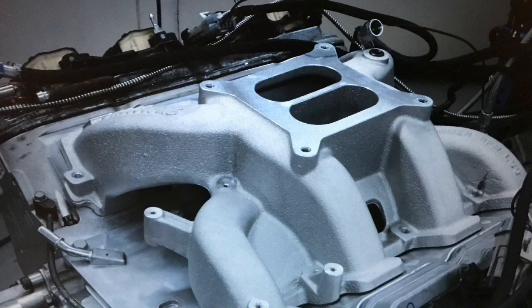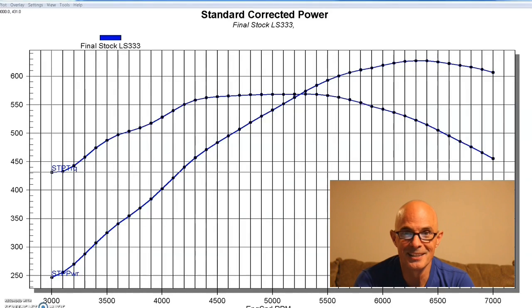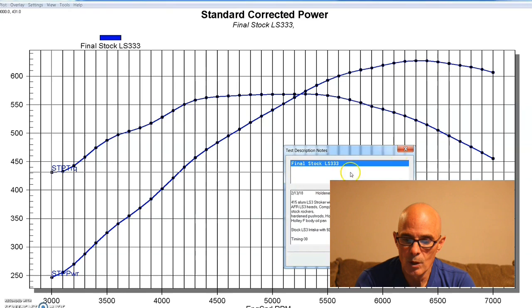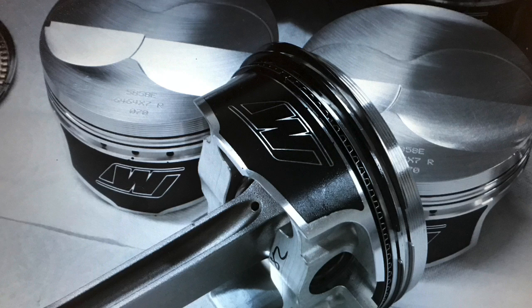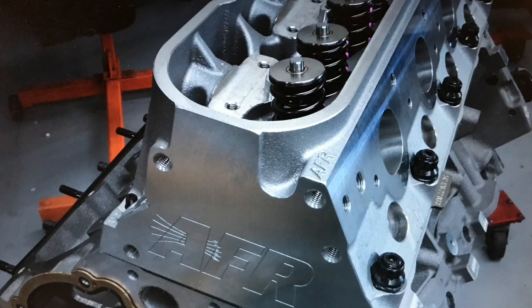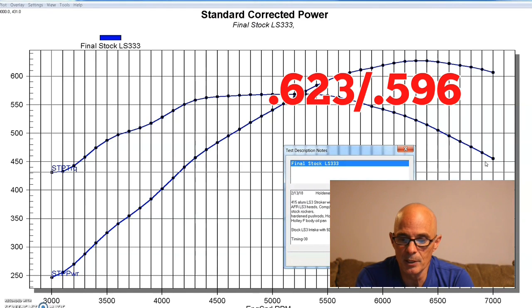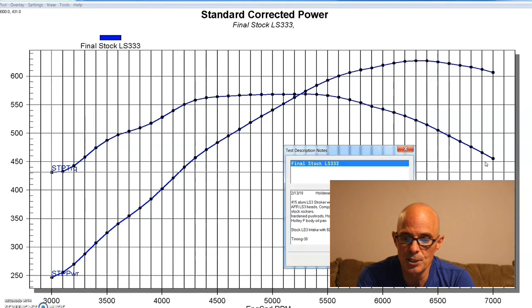To get things started, we assembled our 416 stroker LS3 and ran it first with the factory LS3 intake. This combination was a 416 with Wiseco and K1 parts, flat top pistons, AFR LS3 heads with plenty of airflow potential, and a stage 4 cam from Brian Tooley Racing with 623-596 lift split, 247-258 degree duration split, and a 113 degree LSA. Plenty of cylinder head, displacement, and camshaft so we should be able to know what these intake manifolds are going to do.